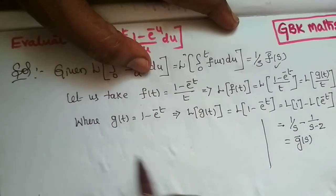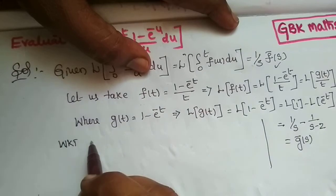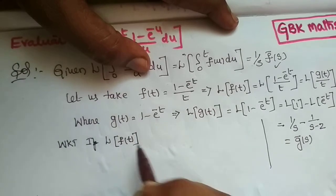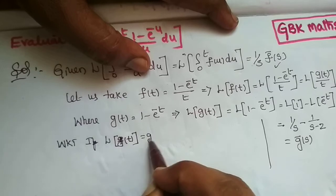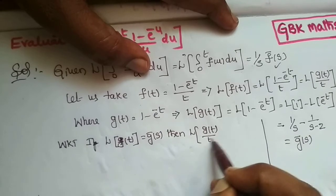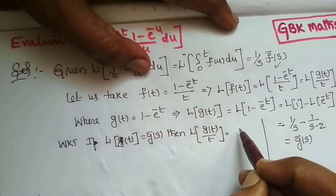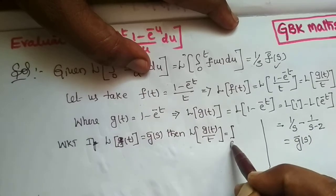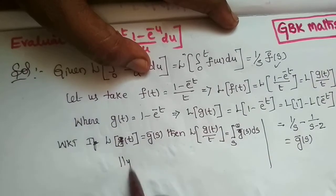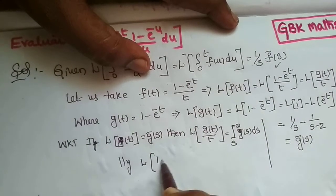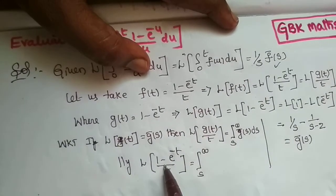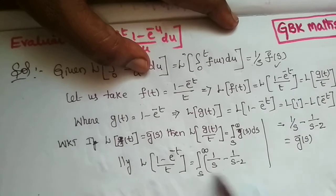After getting g̅(s), we know that if L{g(t)} = g̅(s), then the Laplace transformation of g(t)/t equals the integral from s to infinity of g̅(s) ds. Similarly, applying this to our problem: L{(1 - e^(-t))/t} equals the integral from s to infinity of g̅(s), which is 1/s minus 1/(s+1), ds.